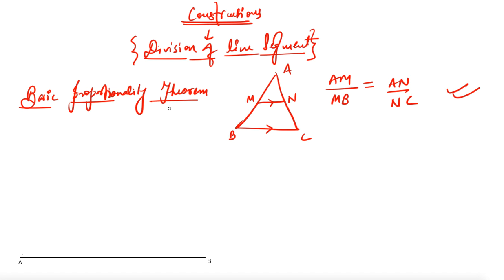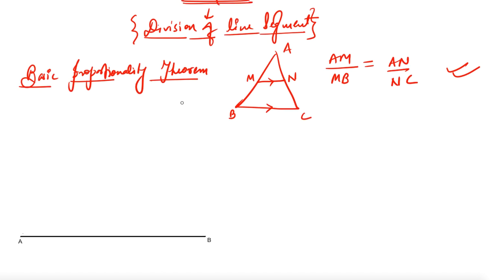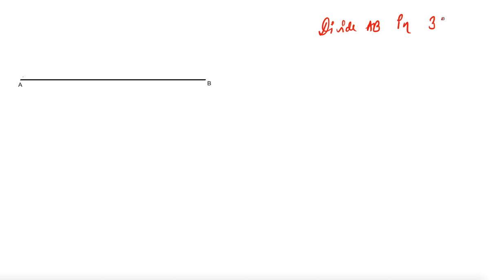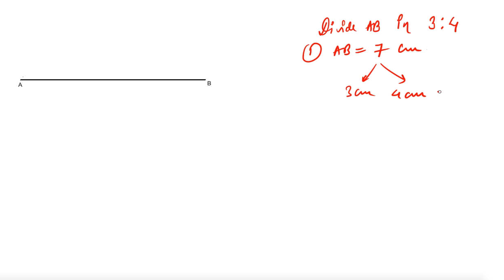Using this theorem we will see how we can divide a line segment. I have constructed a line segment AB and let the question be that I have to divide AB in ratio 3:4. If the length of AB is, say, 7 centimeters, you can easily say 3 cm and 4 cm — mark the points and divide it.